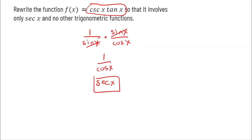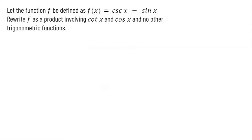Basically, I'm simplifying. In this problem, I'm asked to write the function f(x) = cosecant x minus sine of x and rewrite it as a product involving cotangent x and cosine x. This one's a little bit trickier, so let's take our time. Cosecant is 1 over sine of x using the reciprocal identities, minus sine of x. Now I want to write this as a product — currently it's written as a difference.